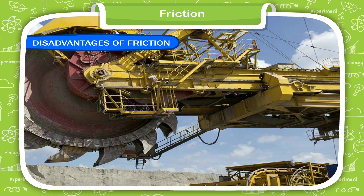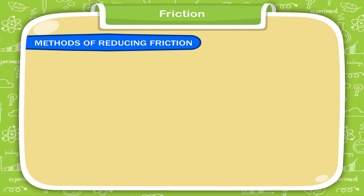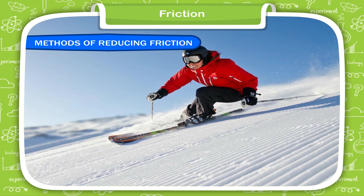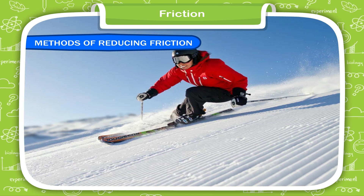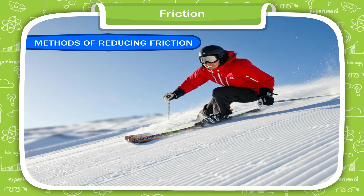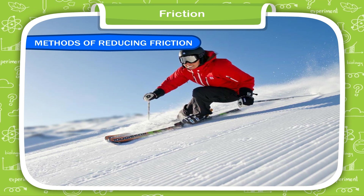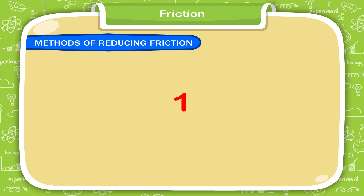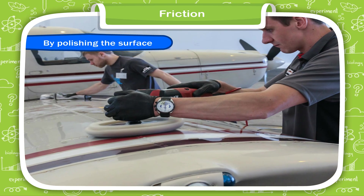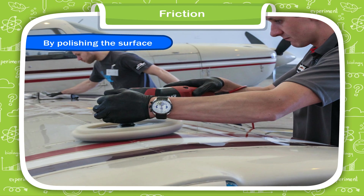Methods of Reducing Friction. Although friction between two surfaces can never be totally eliminated, it can be reduced in these ways. 1. By polishing the surface — this makes the surface smooth and reduces friction.